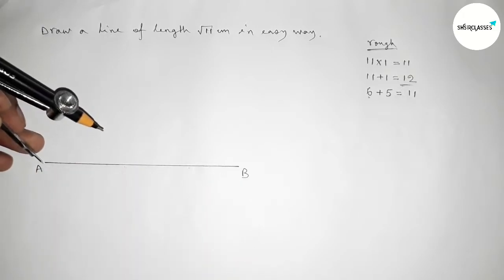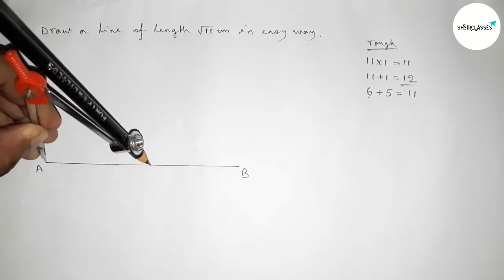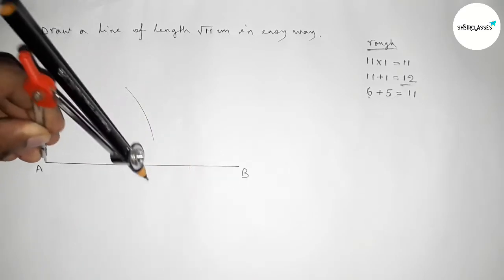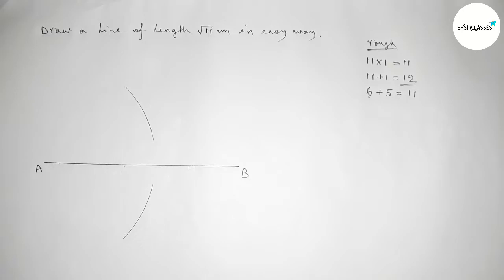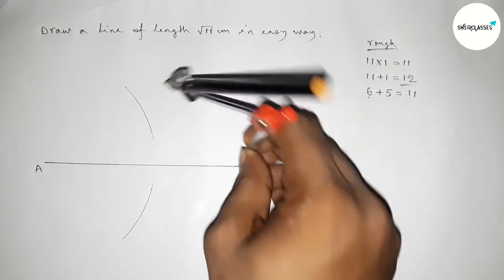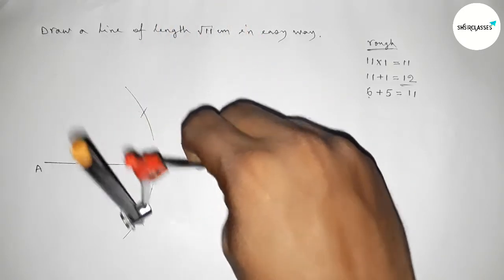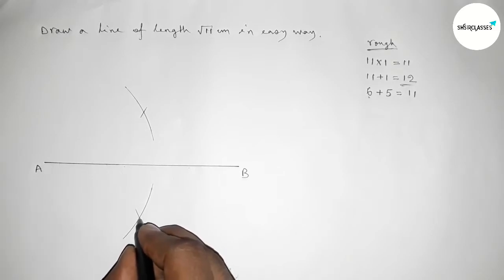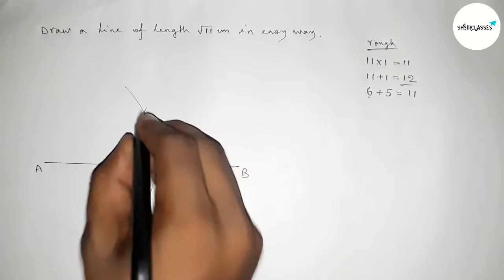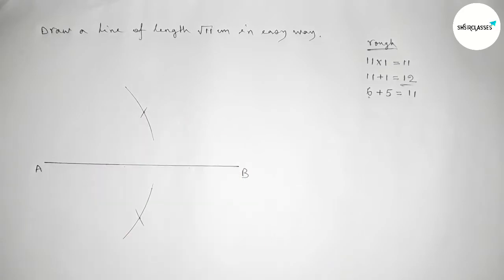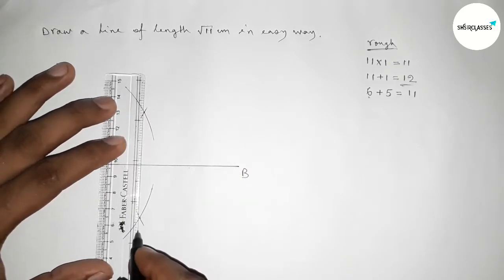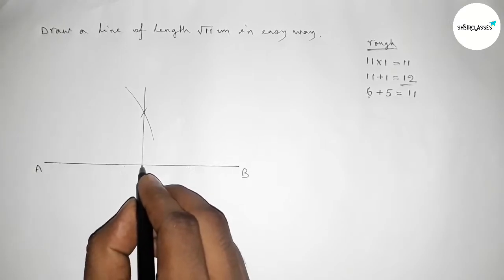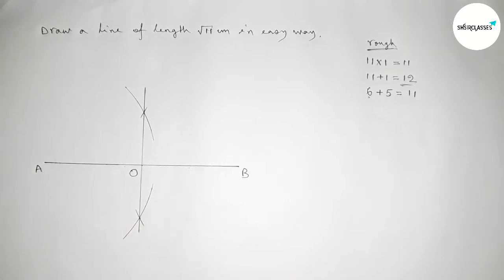Next we have to bisect this line AB. Taking greater than half of AB and drawing an arc with the same length, putting the compass on A and cutting arcs, then on B and cutting arcs, so both curves intersect at two points. Joining this line, which bisects AB at a point O.